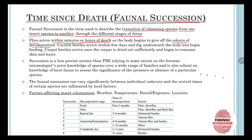Flies arrive within a few minutes or hours of death as the body begins to give off odors of decomposition — flies have an exceptionally good sense of smell, so they are the first to arrive. Then come carrion beetles, which arrive within a few days, digging underneath the body and beginning to feed. Then come carpet beetles, which arrive once the corpse is dried out sufficiently and begin to consume the skin and hair. So the faunal succession sequence is: flies within minutes, then carrion beetles after a few days, then carpet beetles.